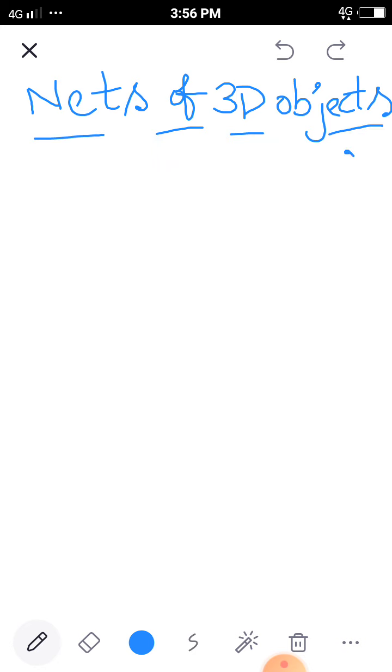And now the next very important topic is nets of 3D objects. How we will derive a net of a 3D object? Net figure. Net means opened figure. Normally the figures are closed figures. So when we will open that figure, how the figure looks like, that we have to identify.